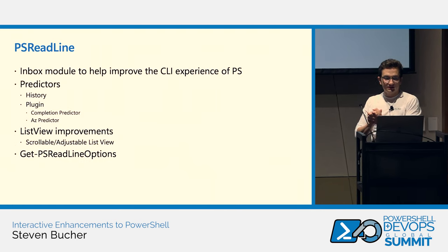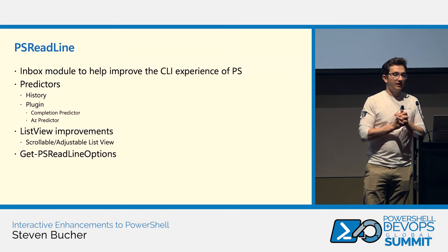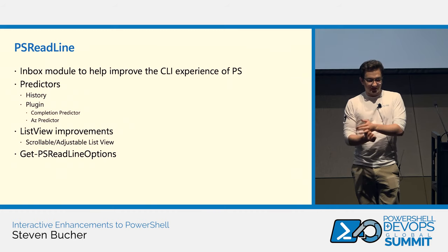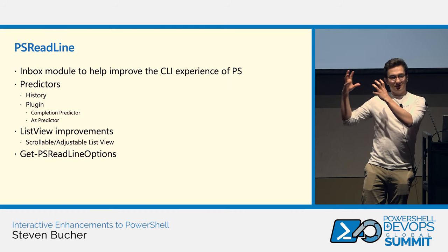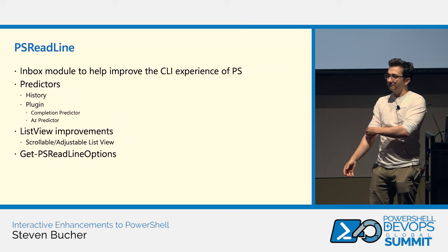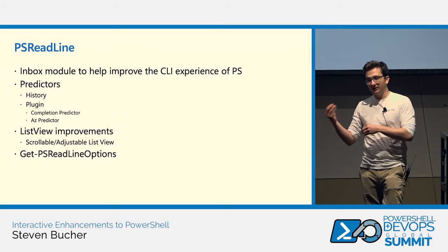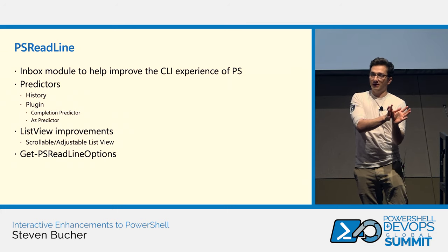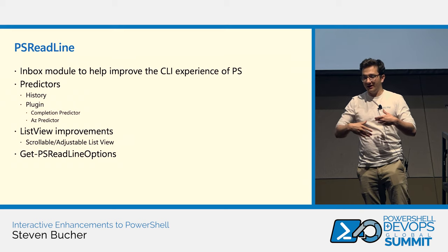PS ReadLine is an inbox PowerShell module that helps improve the CLI experience of PowerShell. It includes improvements like syntax color highlighting, menu complete, key handlers, color changes, and more — all incorporated by default so you get this awesome colorful shell experience. One of the big features we brought with PS ReadLine is Predictive IntelliSense, which tries to predict what you're typing based on what you've previously typed.